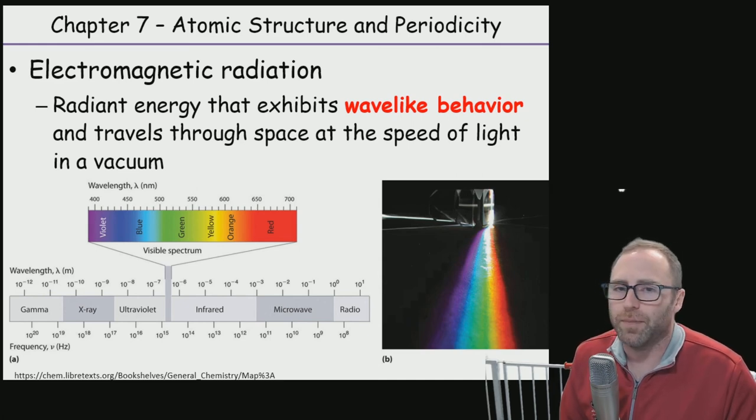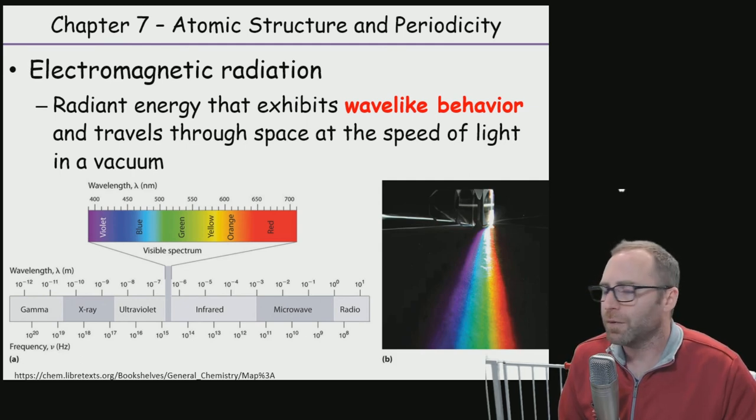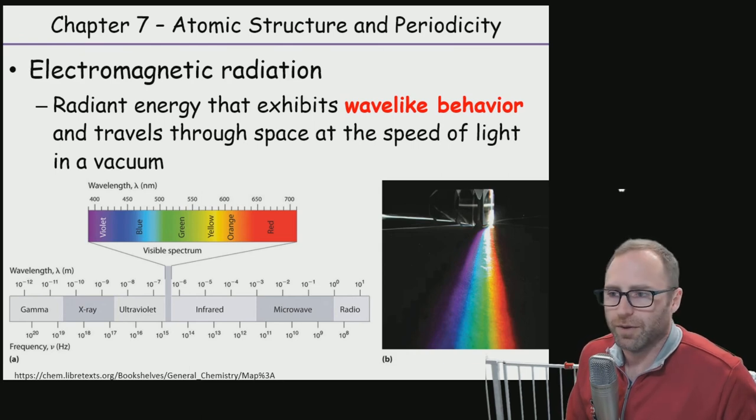At the top we have wavelength, and down here at the bottom we have frequency. You'll notice as one goes up, the other one goes down. Wavelength is going to get denoted by this Greek symbol lambda. And frequency is going to get a fancy V. Typically with wavelength, we measure that in meters, and with frequency, we measure that in hertz.